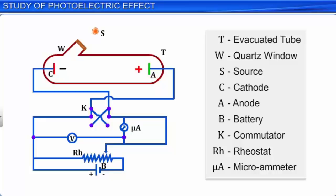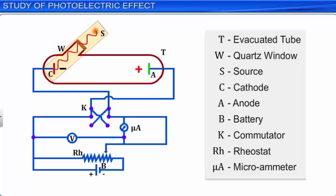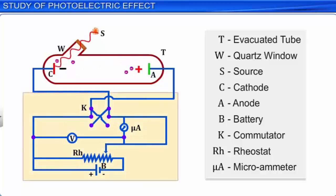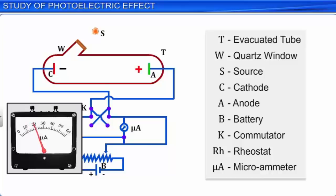The emitter plate is maintained at negative polarity and the collector at positive polarity using the commutator, so that the electrons emitted by the cathode can be collected by the anode A. Monochromatic radiation from source S passes through the quartz window W and is incident on the photosensitive emitter plate C. The emitter plate starts emitting electrons. The potential difference between the cathode and the anode accelerates the electrons towards the collector plate, and hence this potential difference is referred to as accelerating potential. The emitted electrons reach the collector, and the resultant photoelectric current is measured by the microammeter A.